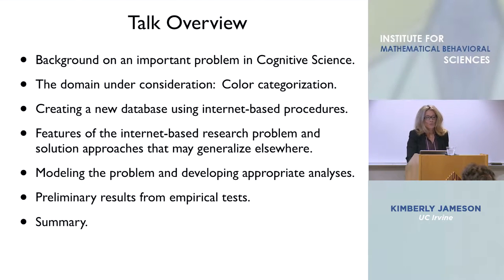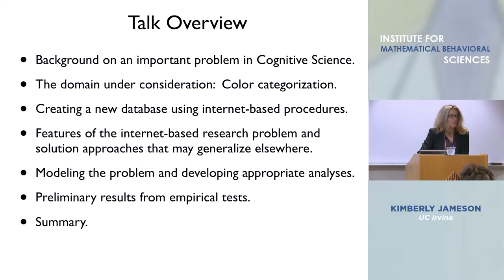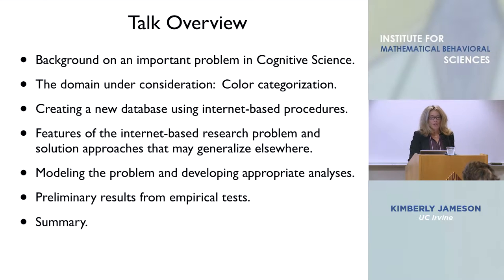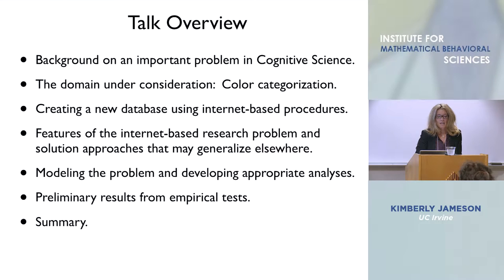A quick talk overview: I want to go through what the important problem is that the database we're going to be looking at addresses and why it's a useful and valuable thing. That requires a little background on the domain under consideration, which is color categorization. I want to give some discussion about creating a new database using internet-based procedures, and talk about features of our research that may apply in other domains of internet-based research and how our approach could be generalizable.